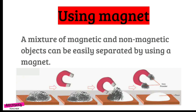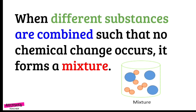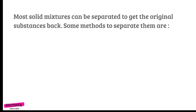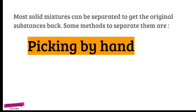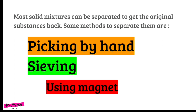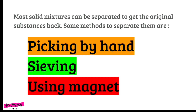So that is our lesson. Let us conclude what we have learned. When different substances are combined and no chemical change occurs, it forms a mixture. Most solid mixtures can be separated to get the original substances back by using three methods: picking by hand, sieving, and using a magnet. That's all for this lesson — see you next time, bye!